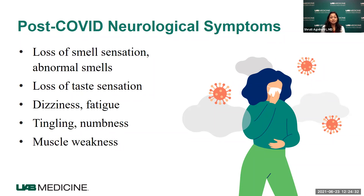Dizziness and fatigue are other symptoms that can continue. The dizziness can mean different things: for some patients it refers to lightheadedness, a feeling like they are going to pass out; for others, it means a sensation of being off balance, like they are going to fall. Very few patients have true vertigo or a spinning sensation. Tingling and numbness in the arm or leg — sometimes moving around — is also a common post-COVID neurologic symptom.